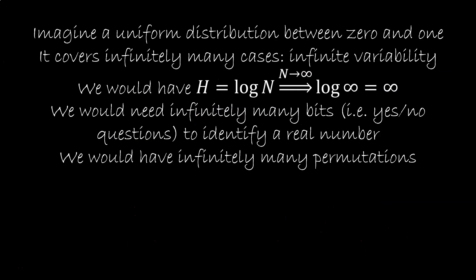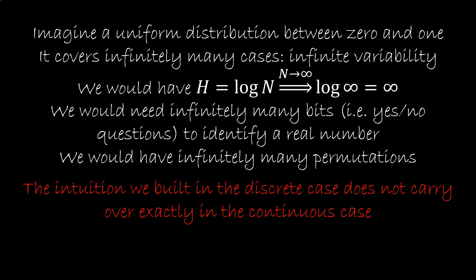Imagine a uniform distribution between 0 and 1. It covers infinitely many cases, so intuitively we have infinite variability. In fact, h equals log n, the number of cases, but n goes to infinity, and log of infinity goes to infinity. We would need infinitely many questions to identify a real number, and we'd have infinitely many permutations. So the intuition we built in the discrete case does not carry over exactly. Let's see how exactly one does the limit and derives the continuous expression.